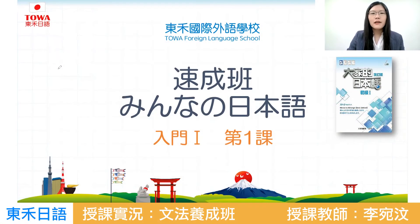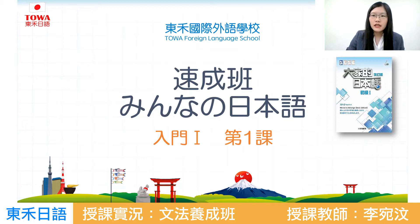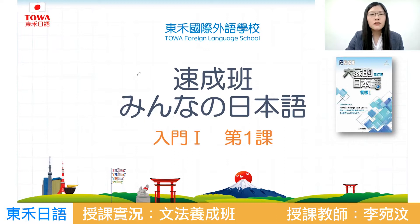大家好！我們這堂課是書成班，民南日本語的書成班。我是你們的呂老師，李王文です。我們會使用的是這一本《大家日本語初級一》，從入門一的第一課開始。では行きますよね。